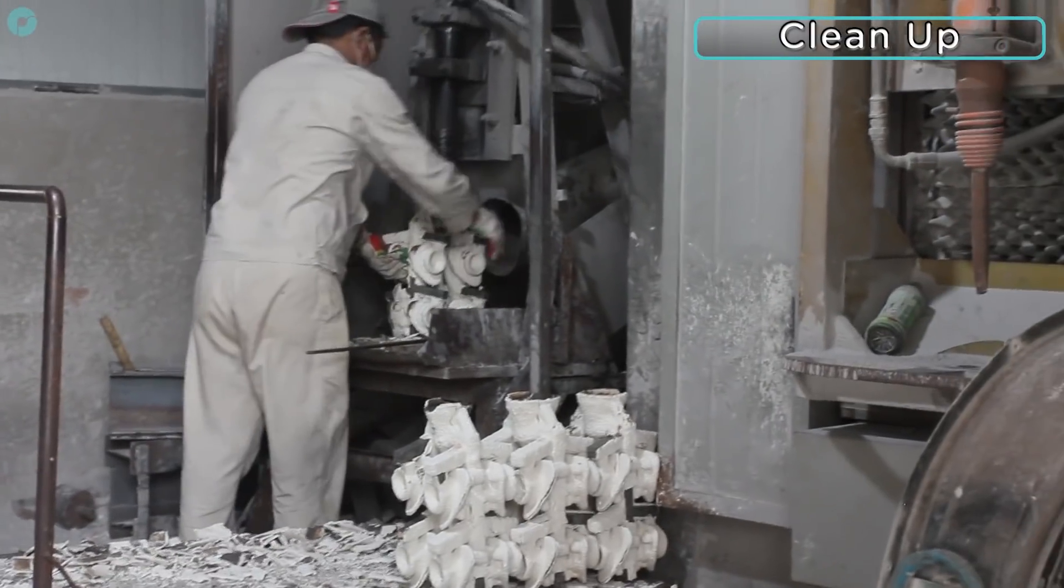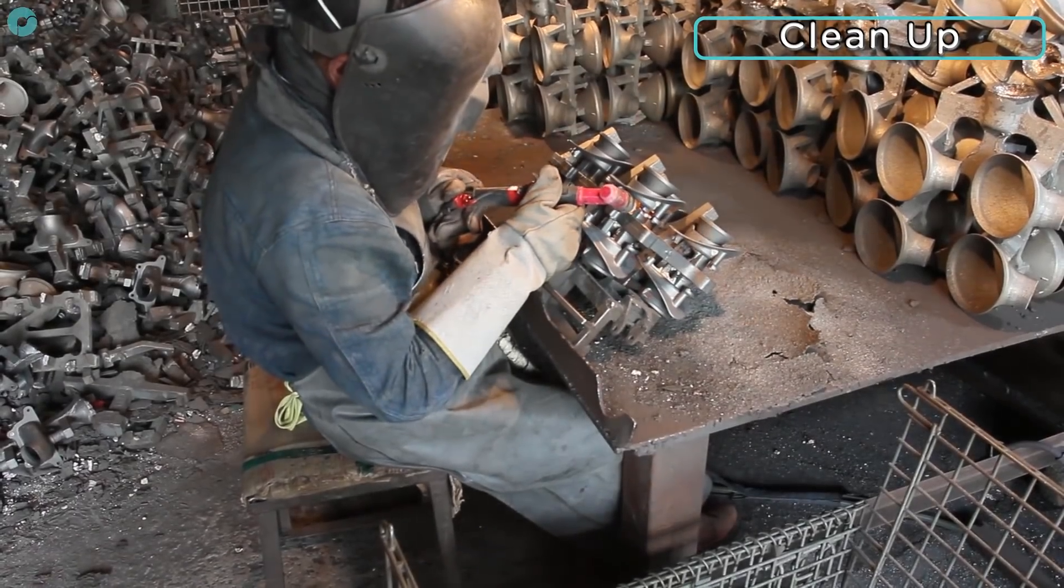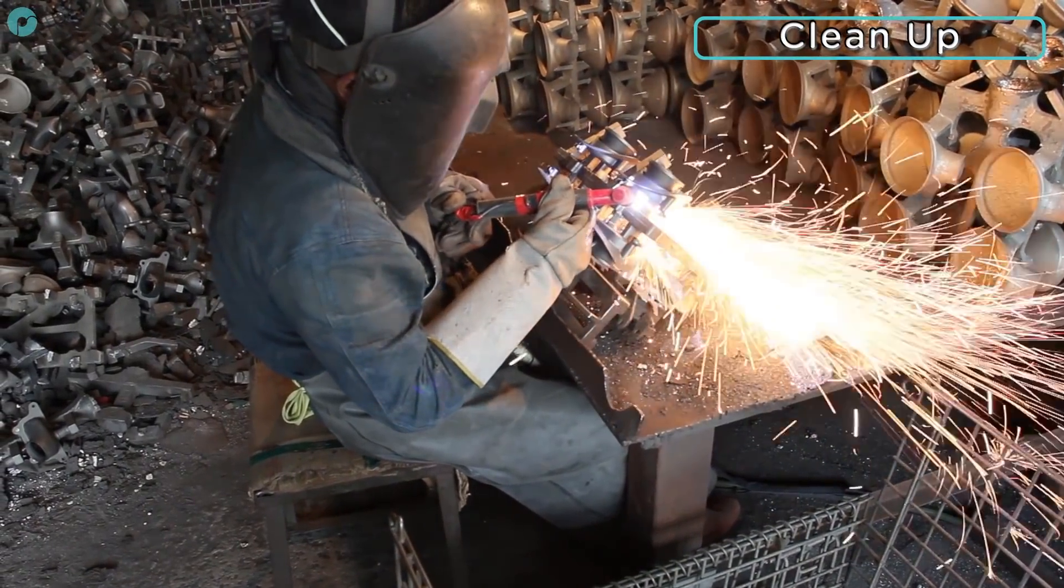Once cooled, the brittle investments are shaken off with a pneumatic jack, before a plasma cutter is used to remove the parts from the metal tree.